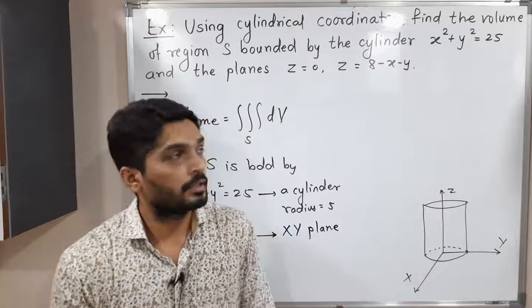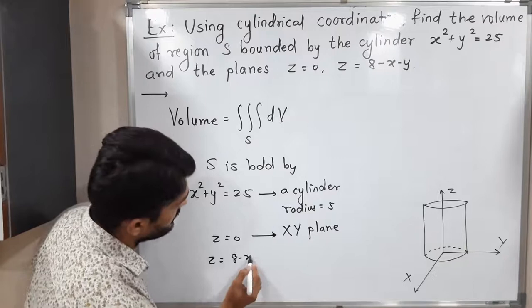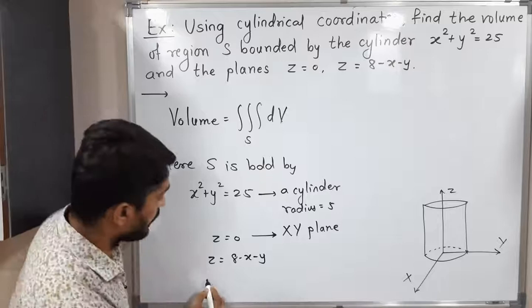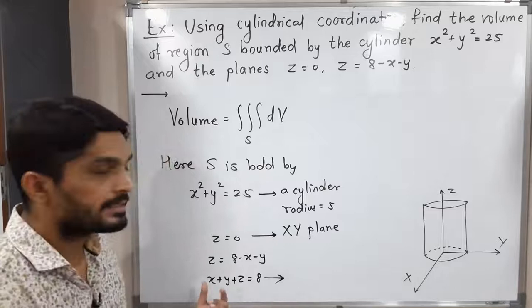We also have the equation z = 8 − x − y. Shifting x and y to the left-hand side gives x + y + z = 8. We can easily see the power of x, y, z is 1, so this represents a plane.